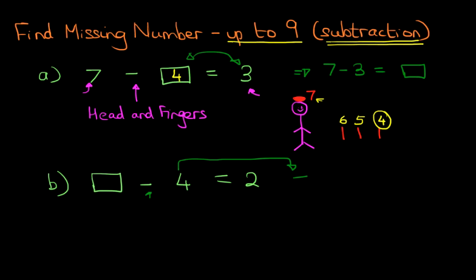So, therefore, if we move it across, it becomes a plus. So, the question can be rewritten as something equals 2 plus 4. The minus has become a plus. Just understand that concept.